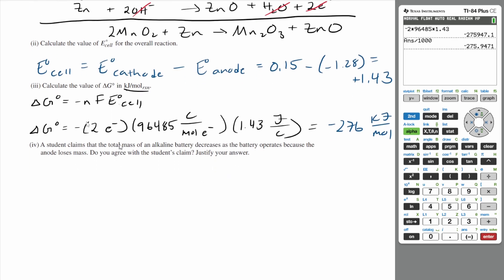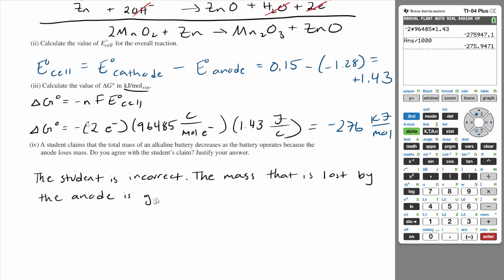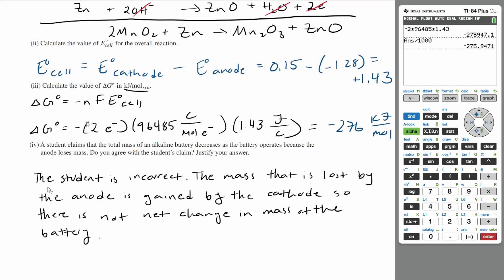A student claims that the total mass of an alkaline battery decreases as the battery operates because the anode loses mass. Do you agree? While it is true that the anode loses mass, all the mass lost by the anode is deposited on the cathode. So overall there is no net change in mass — that would otherwise break the law of conservation of mass. The student's claim is incorrect; the mass lost by the anode is gained by the cathode, so there is no net change in the mass of the battery.